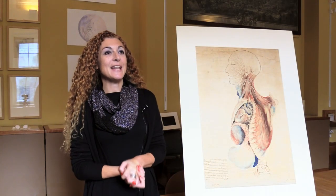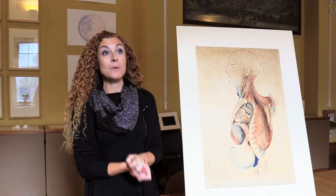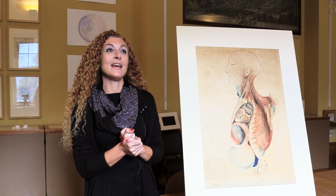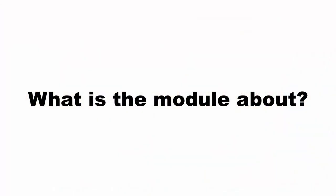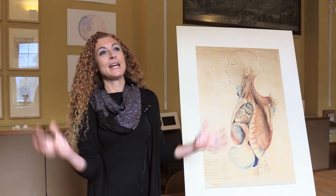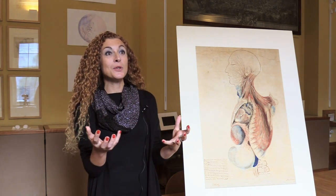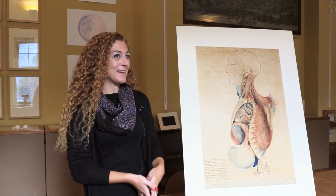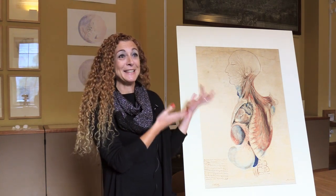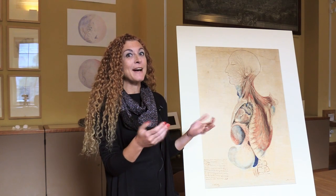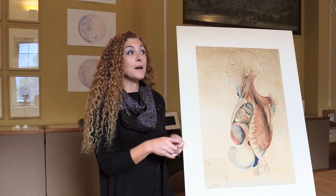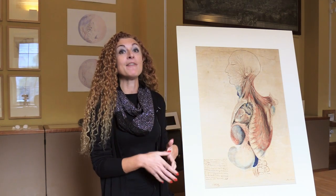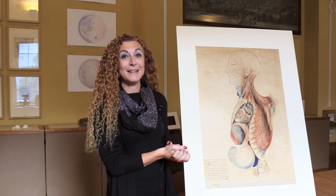My name is Chiara Ambrosio and I teach HPSE 0111, a course called Science, Art and Philosophy. The course is a fantastic exploration into what scientists do when they produce images — you can see an example here next to me. The course takes place in this very space, the UCL Art Museum, where many lectures will take place with actual artefacts, exploring the relationships between scientific practices and artistic practices with reference to real artworks.